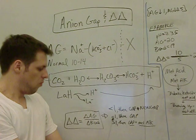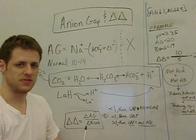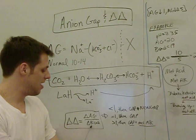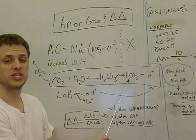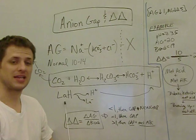If it's equal to 1, the delta-delta, then you have a pure gap acidosis. And this should make sense to you, because what we're saying when this equals 1 is that for every change in bicarb shown here, you're also getting a change in the anion gap shown here.